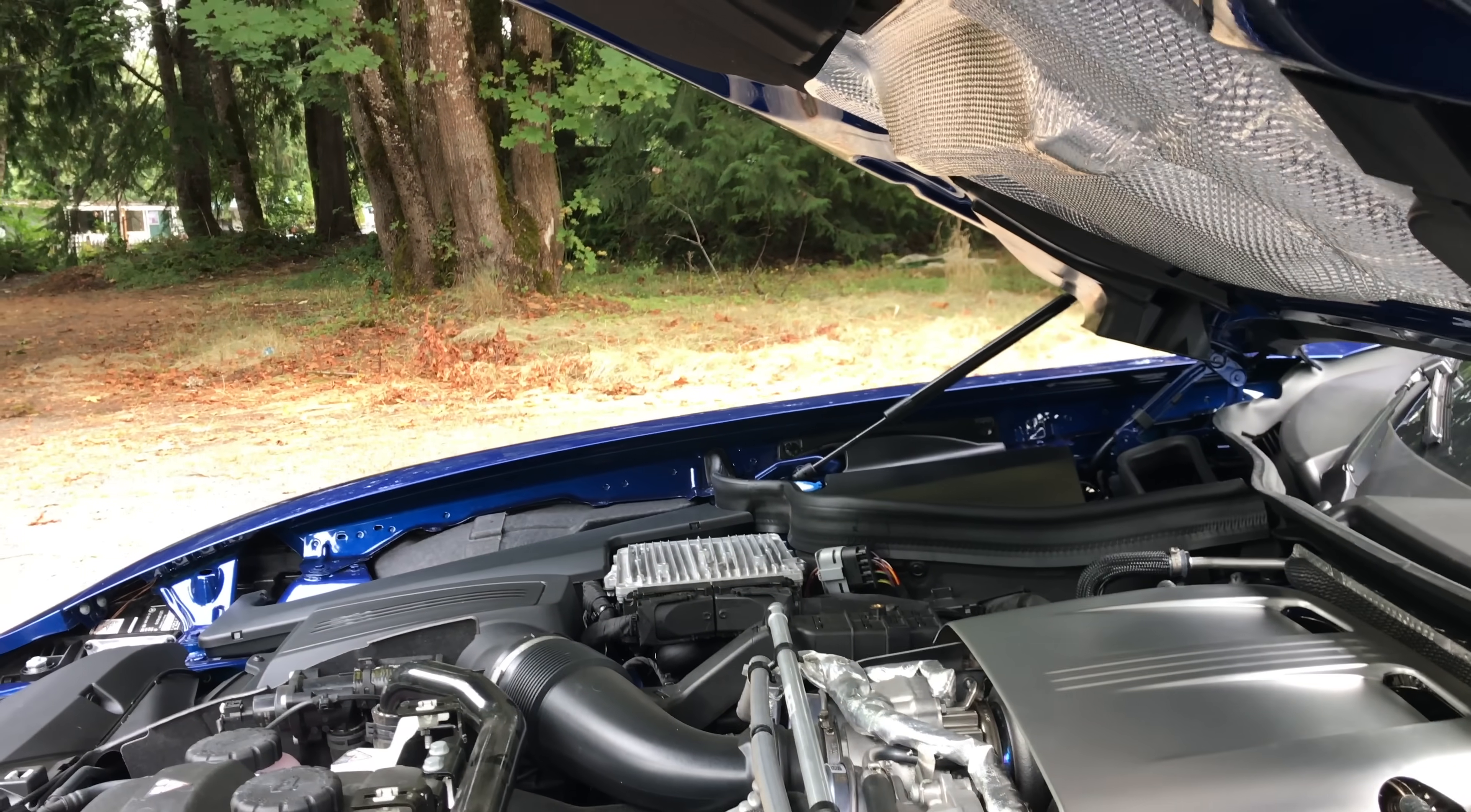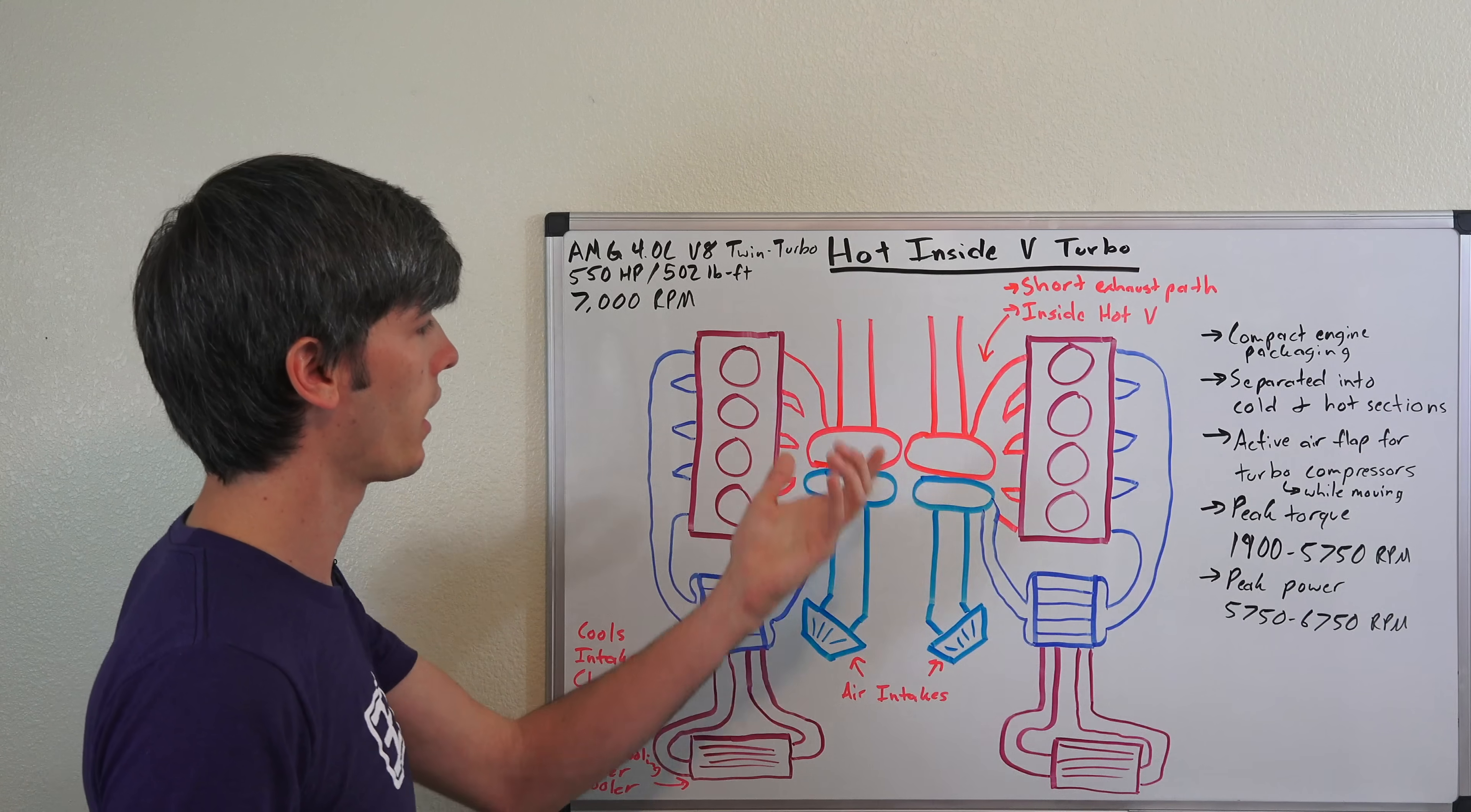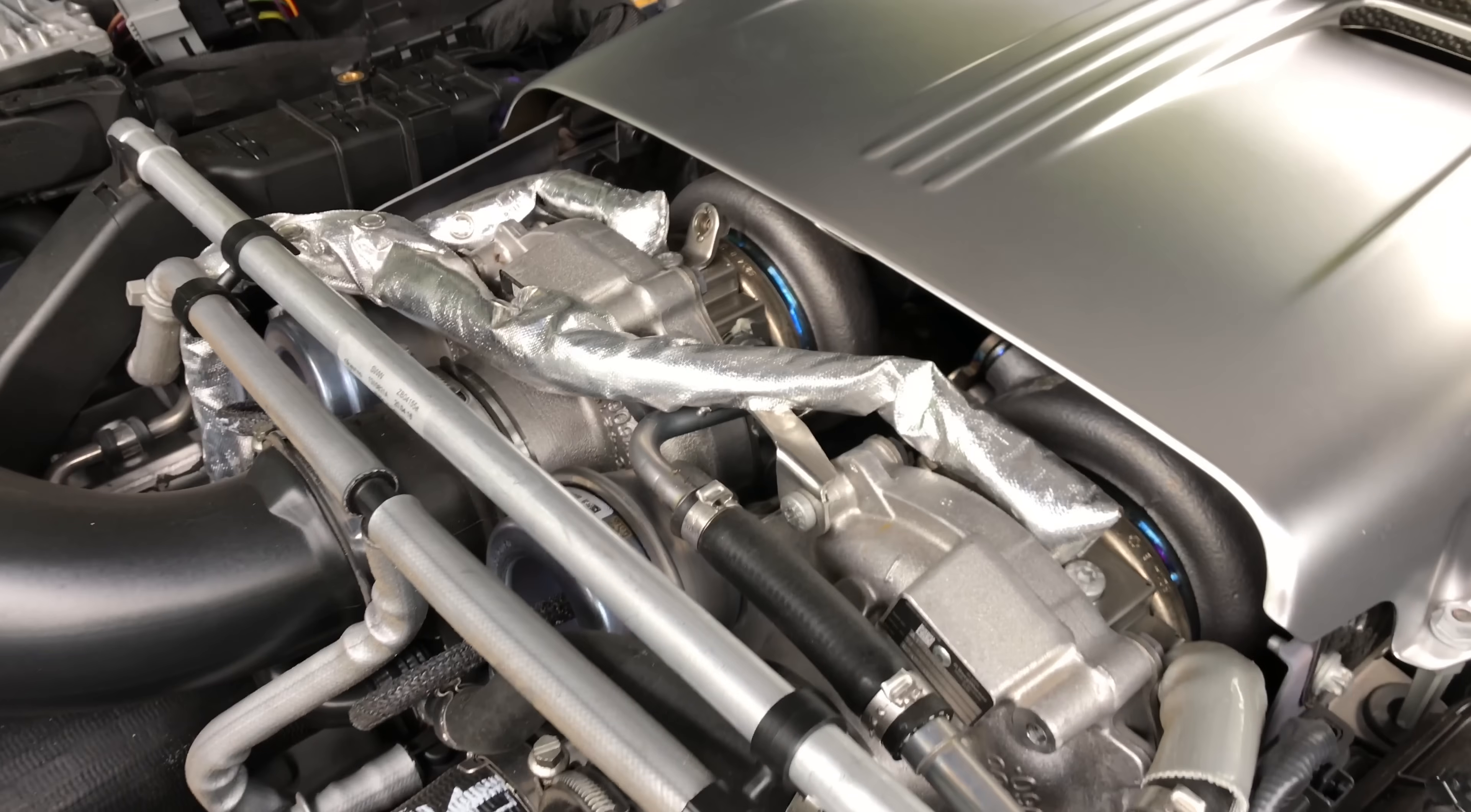When the vehicle comes to a stop, this flap in the front will close. As a result you won't have any of that hot air from the engine passing forward and then traveling in front of your radiator. Of course that would reduce the effectiveness of your radiator if that hot air were allowed to come forward in front of it. So it closes when you're stopped, it opens up while you're driving, and that allows for that cool air to be deflected down onto those intake portions of the turbocharger to help keep those cool.